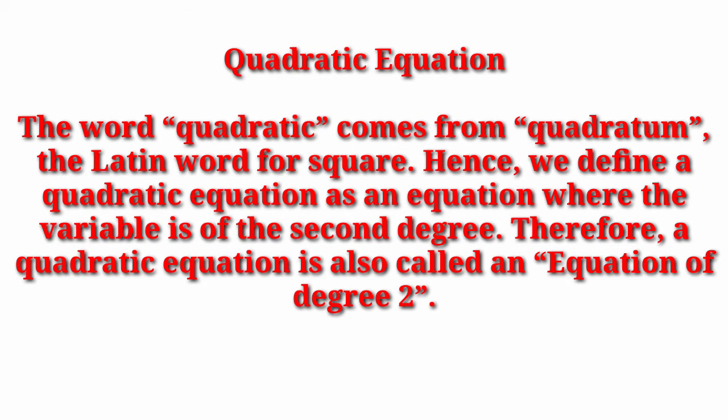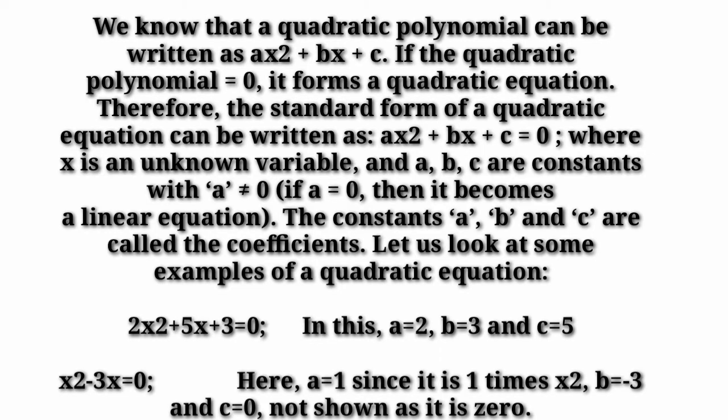An equation having degree 2 is known as a quadratic equation — this is the simplest definition. We know that a quadratic polynomial can be written as ax² + bx + c. If the quadratic polynomial equals 0, it forms a quadratic equation. Therefore, the standard form of a quadratic equation is ax² + bx + c = 0. The most important condition is that a should not equal 0; if a equals 0, it becomes a linear equation. The constants a, b, and c are called the coefficients.